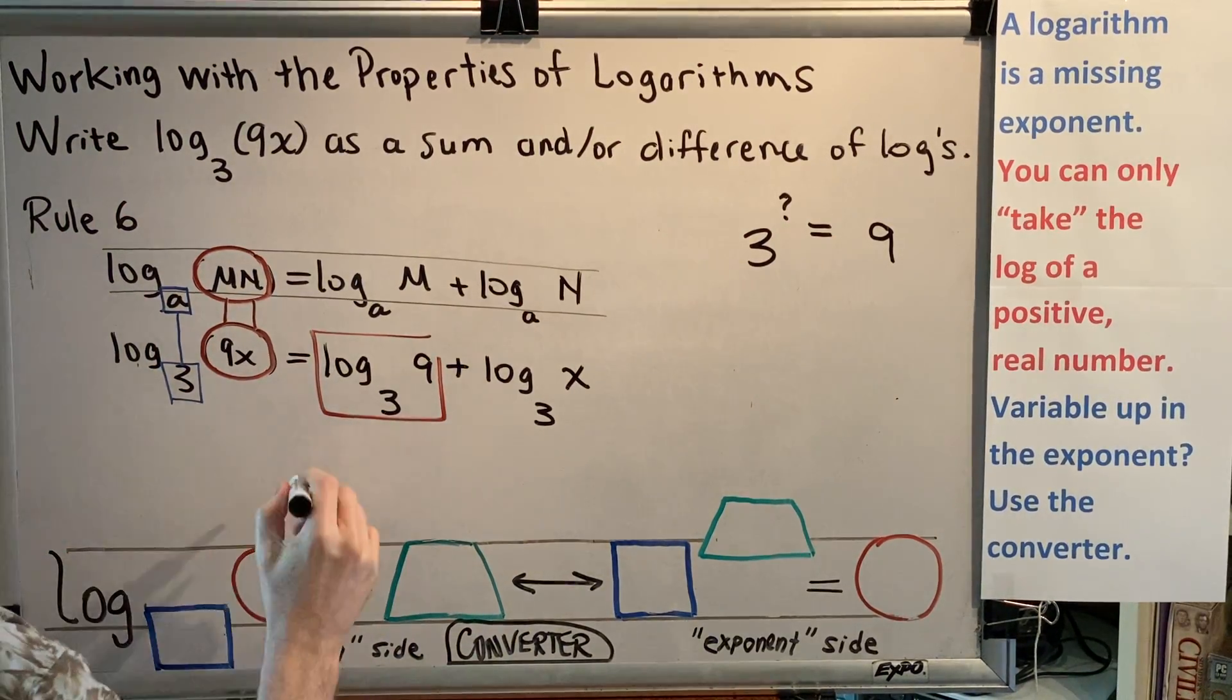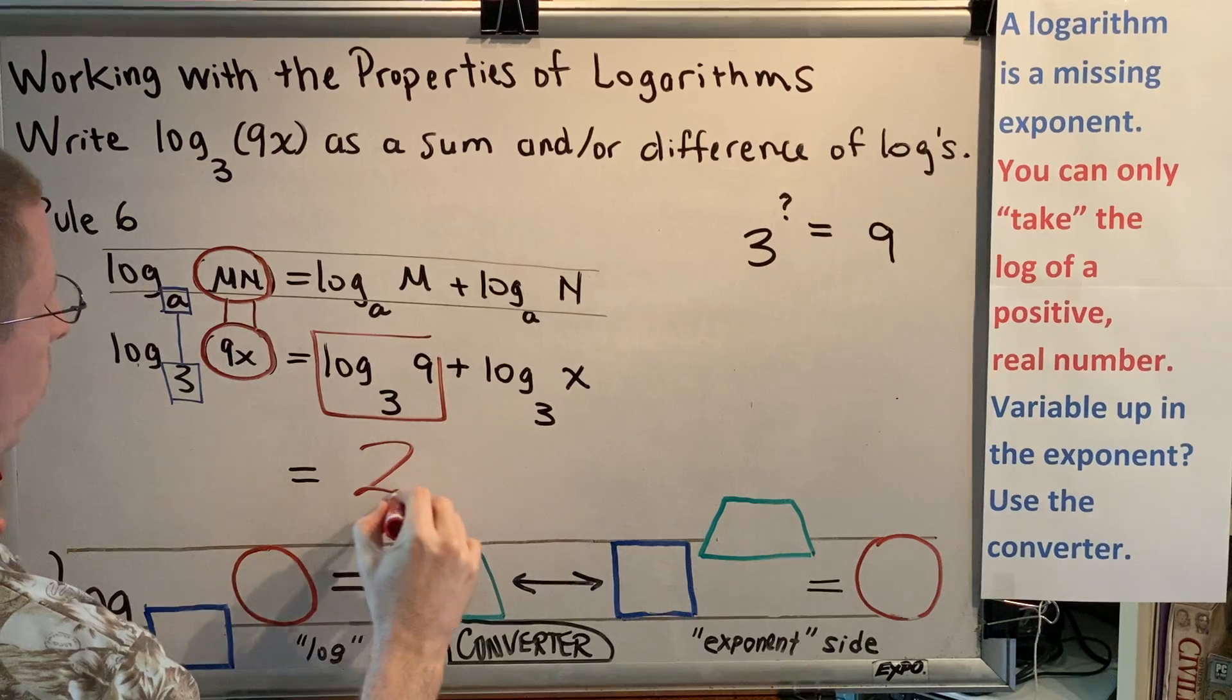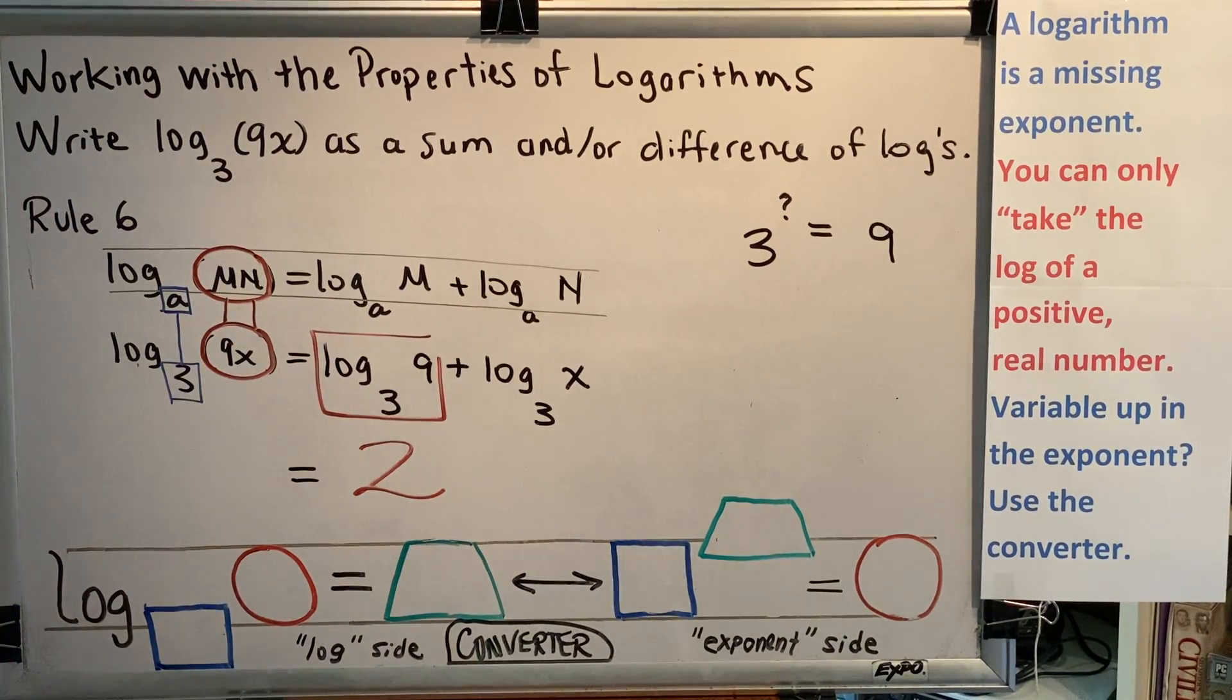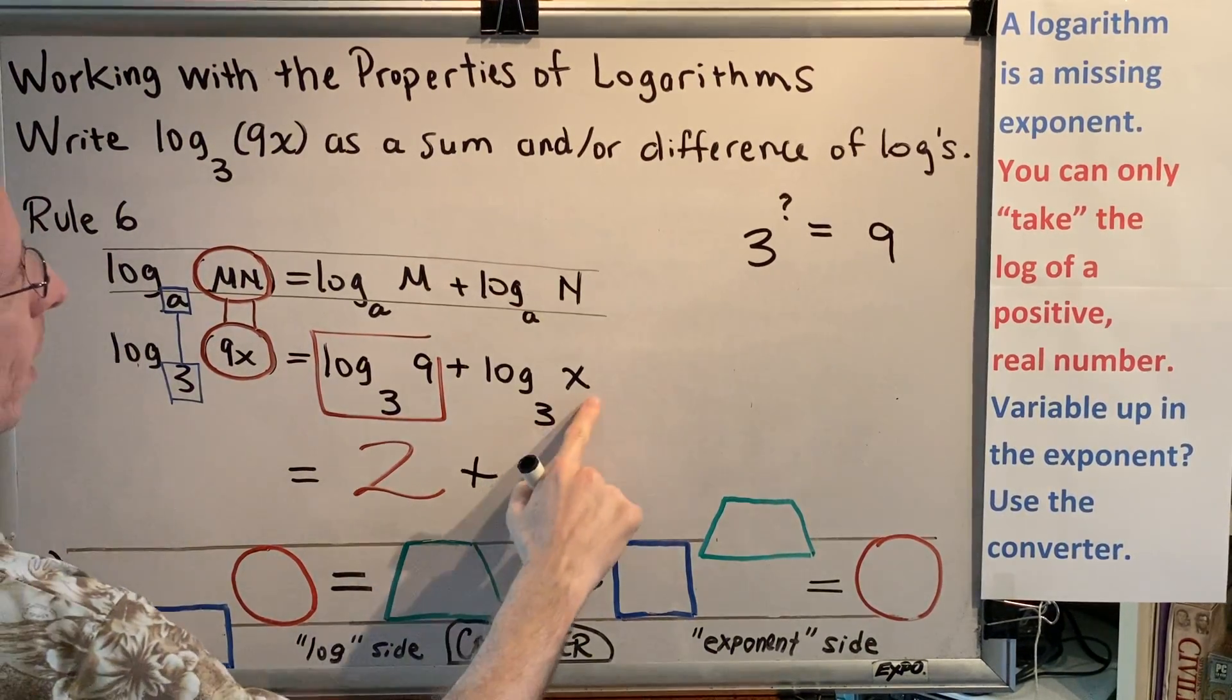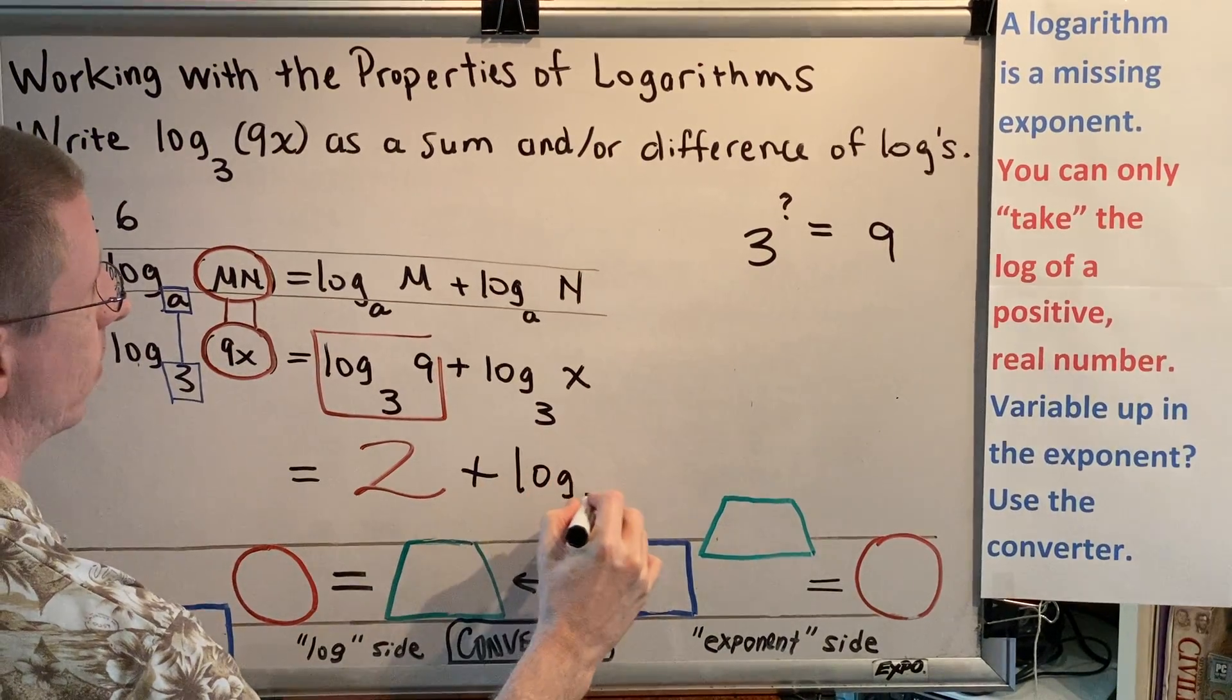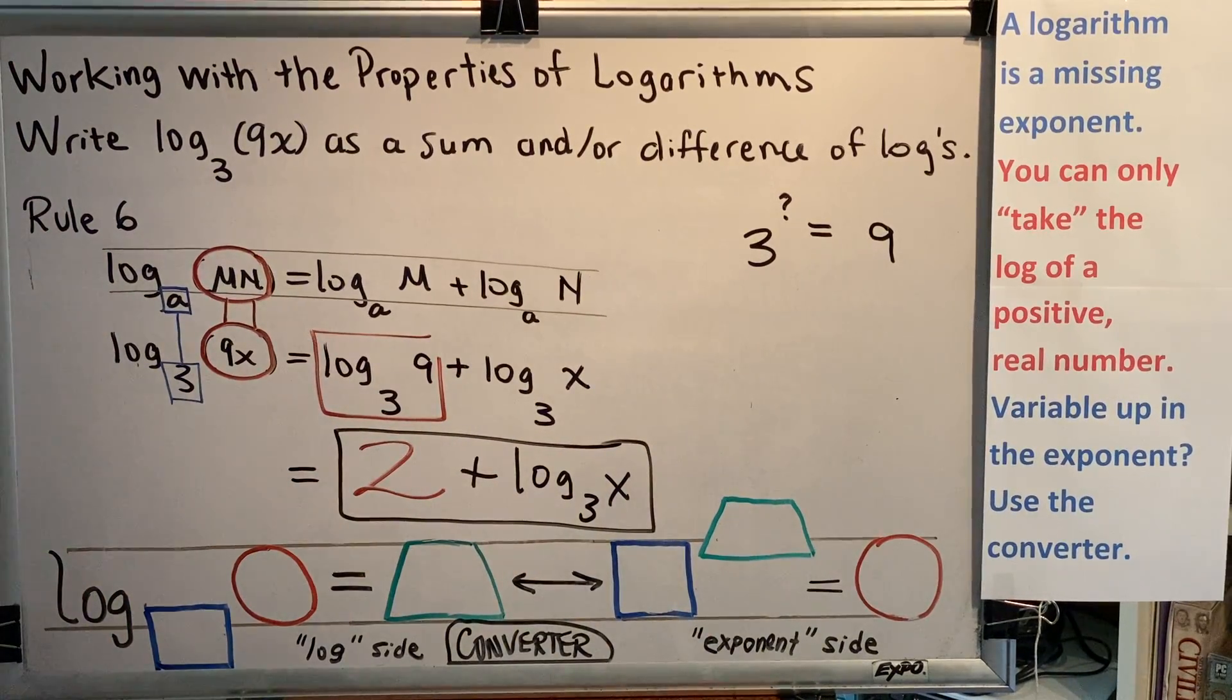Well, remember that a logarithm is a missing exponent. So what that means is that log base 3 of 9 is simply the number 2. This whole logarithm turns into the number 2. Now, can we do the same thing for this logarithm? The answer is no, because we don't have two numbers here. So, we just leave that as it is. And this gives us our final answer. The answer to the question is 2 plus log base 3 of x.